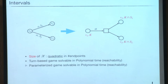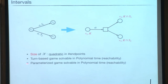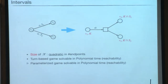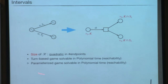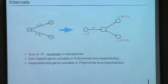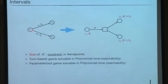The easiest case is intervals. It is polynomial because if the game arena uses only intervals, you can construct only quadratically many distinct intervals from them. This gives a polynomial-size knowledge game, and since turn-based reachability games are solvable in polynomial time, the whole problem is polynomial-time solvable.